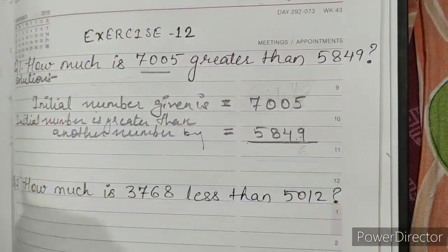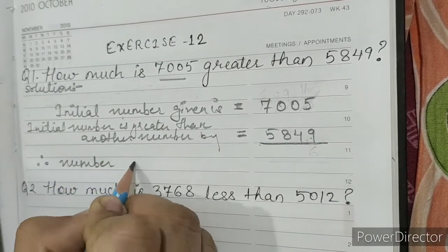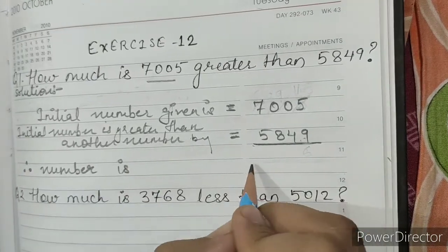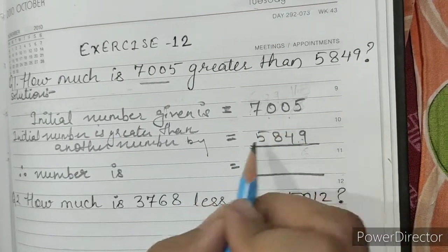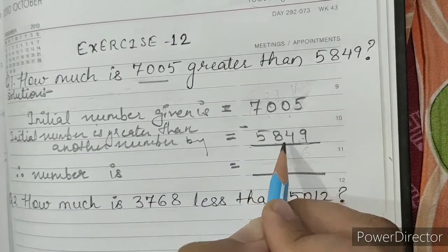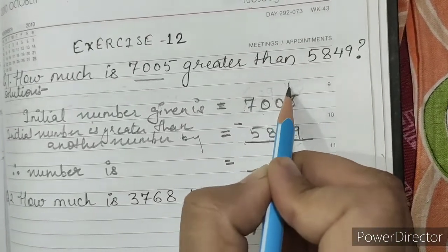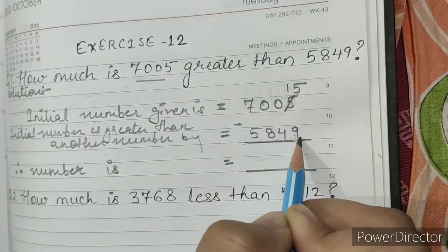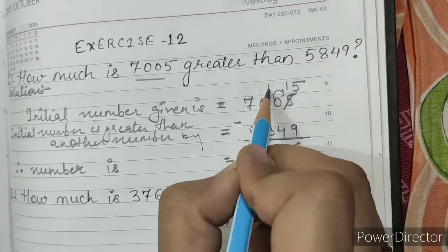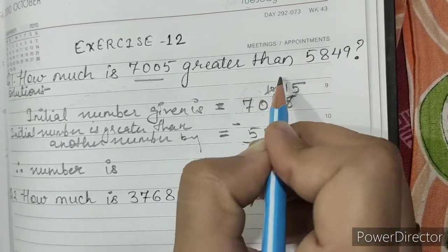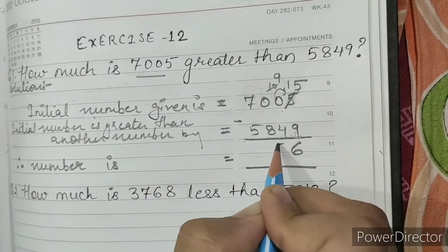So, therefore, number is 7005 minus 5849. So, 5 minus 9, it is not possible to deduct. It will become 15. 15 minus 9 is 6. So, we have borrowed from here. It was 10. Now, it will become 9. 9 minus 4 is 5.